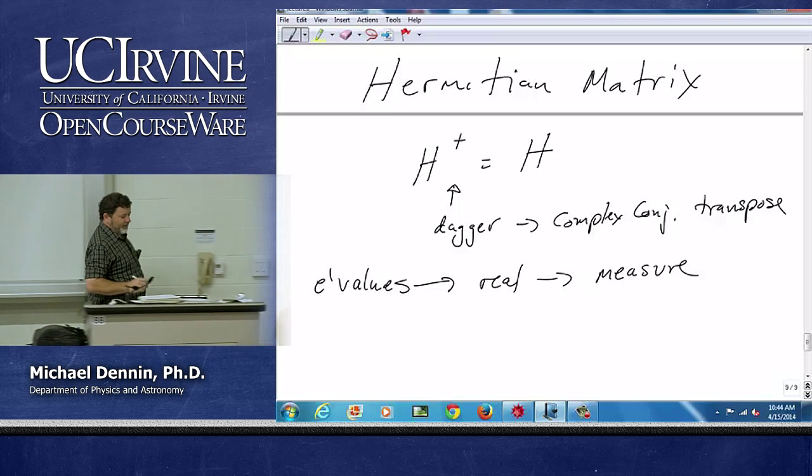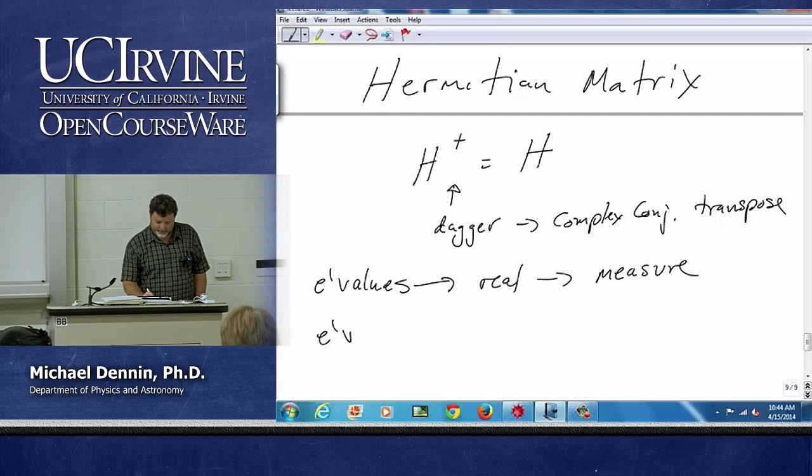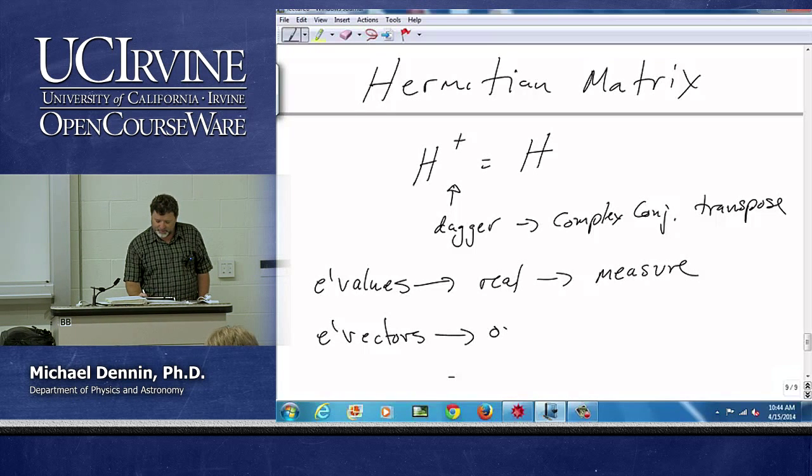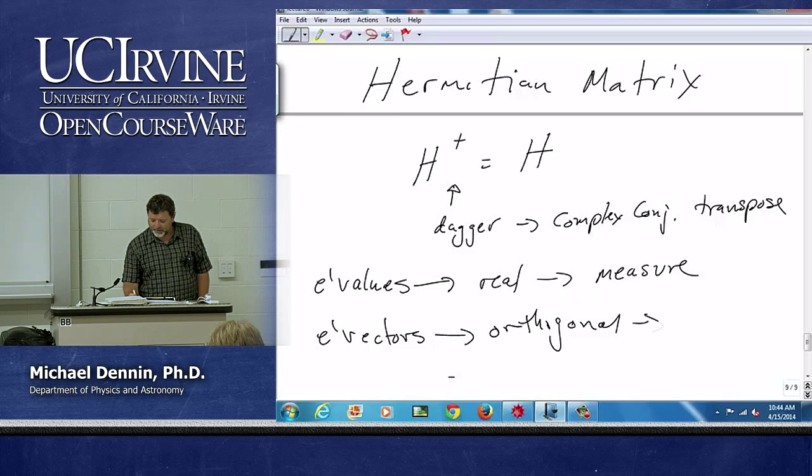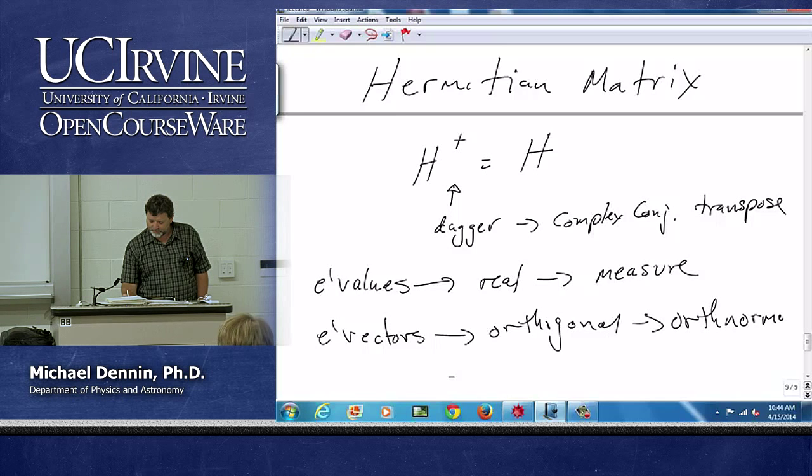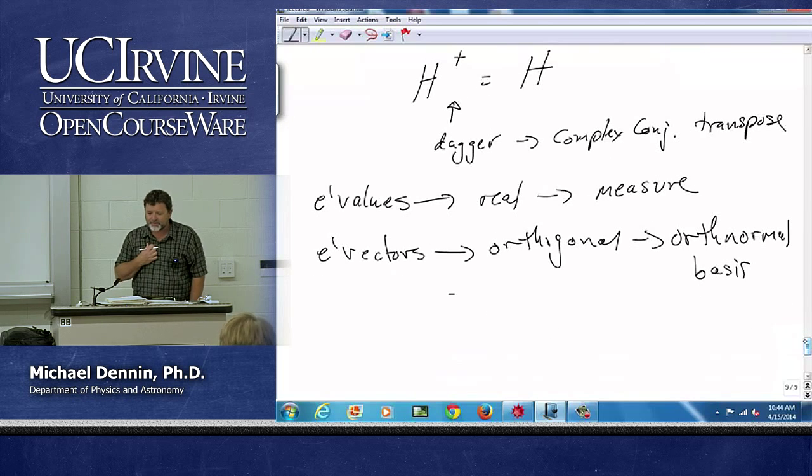And then the eigenvectors are guaranteed to be orthogonal, and that's nice because then they can make an orthonormal basis. Once they're orthogonal, you can normalize them and then you can make a really nice basis.